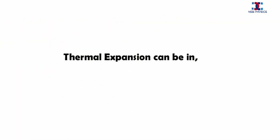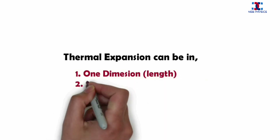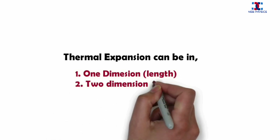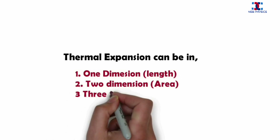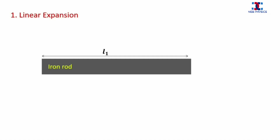Thermal expansion can be in one dimension — that is, along length; in two dimensions — that is, in area; and also in three dimensions — that is, in volume. Thermal expansion in one dimension is also called linear expansion.